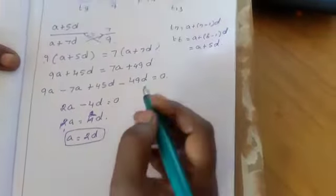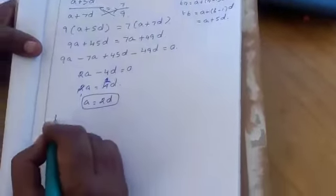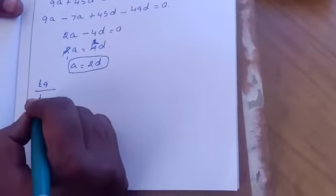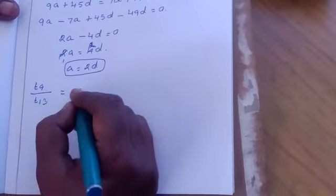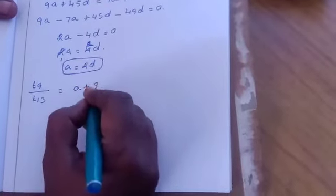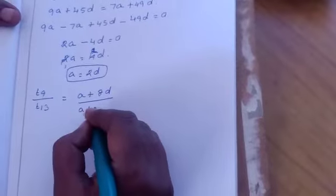Next what we are going to find? T9 divided by T13. T9 is A plus 8D divided by T13 is A plus 12D.